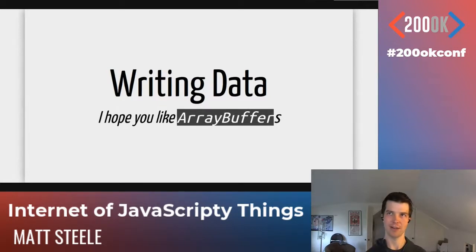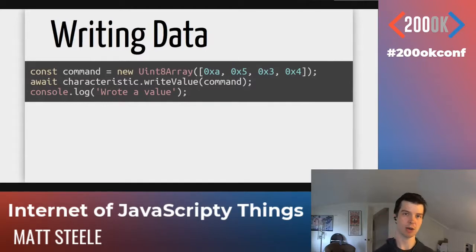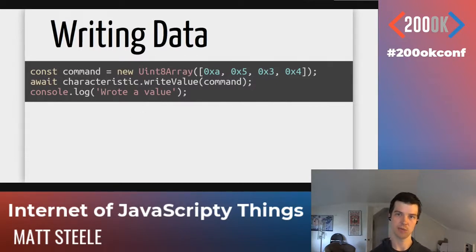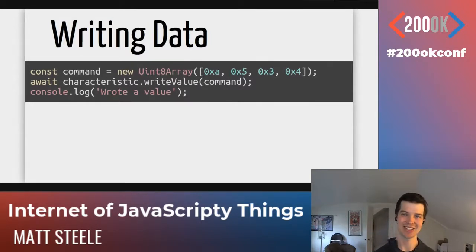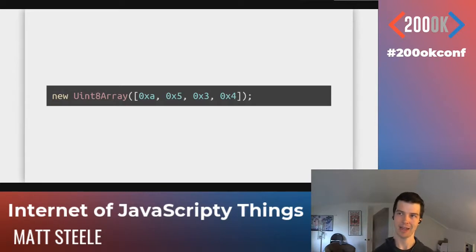Reading data is pretty straightforward. If you want to write data, that's not bad either — it just takes a little bit of different bit manipulation. When you're writing values to a characteristic, you can use characteristic.writeValue, which also returns a promise. Generally what you end up having to write is not a string or a number, but an array of bytes. You might want to do a Uint8Array and then use these hex values. I'm a JavaScript person — I don't deal with this on a day-to-day basis. The question is what do you actually use for this array buffer? How do you build this out? The answer is it depends on which type of device you're working with and what those values are looking for.